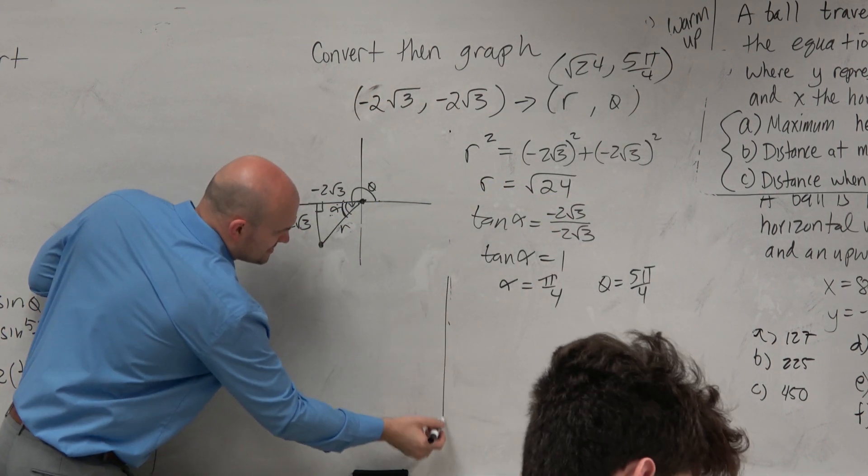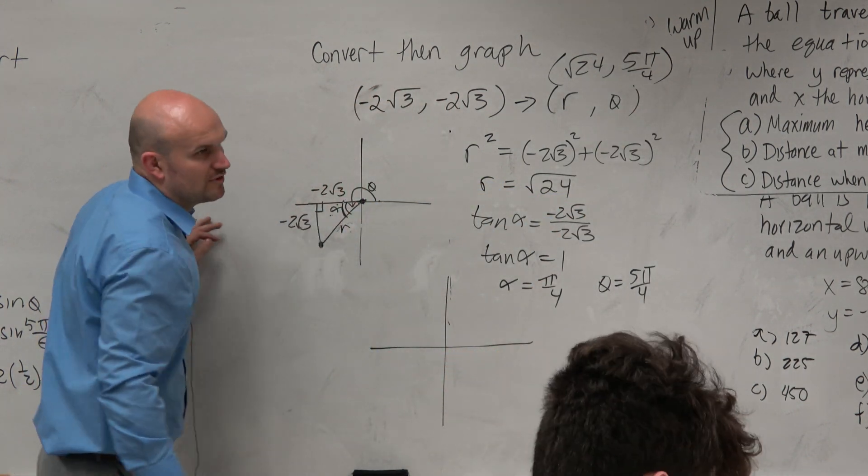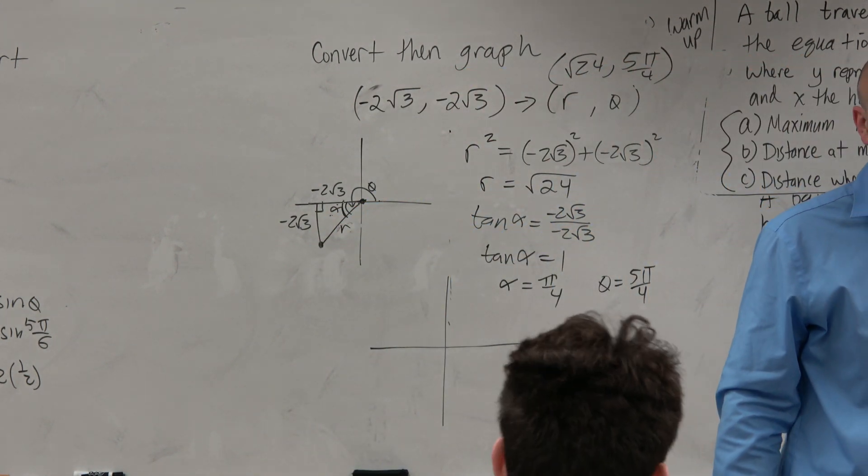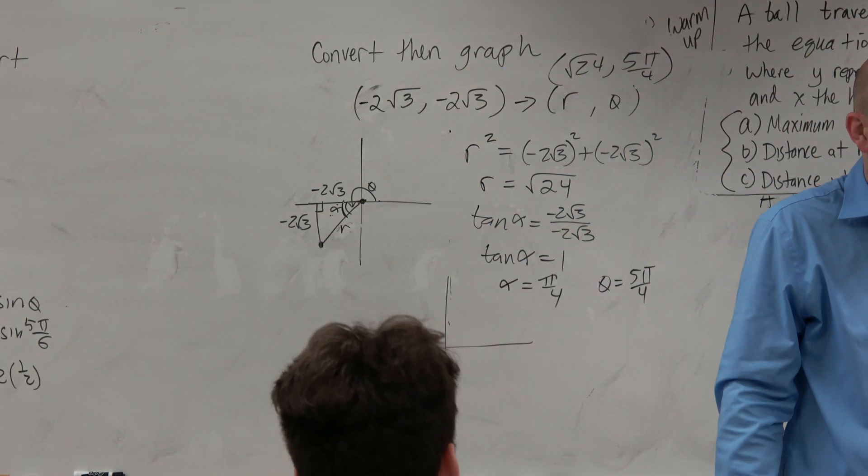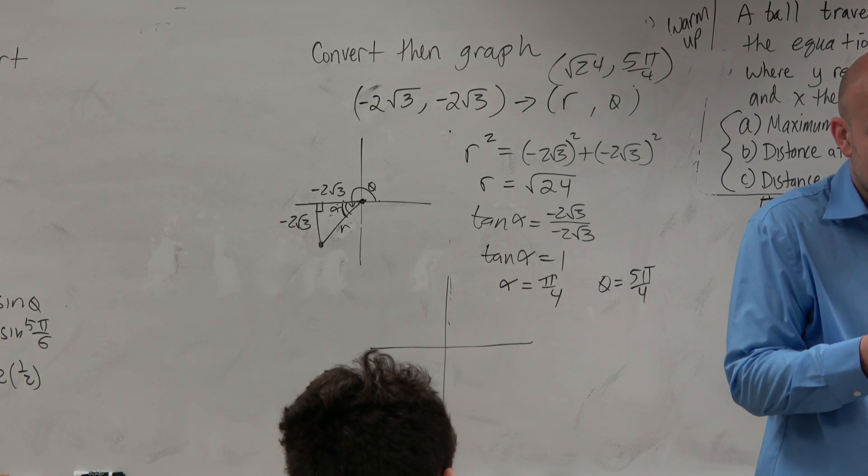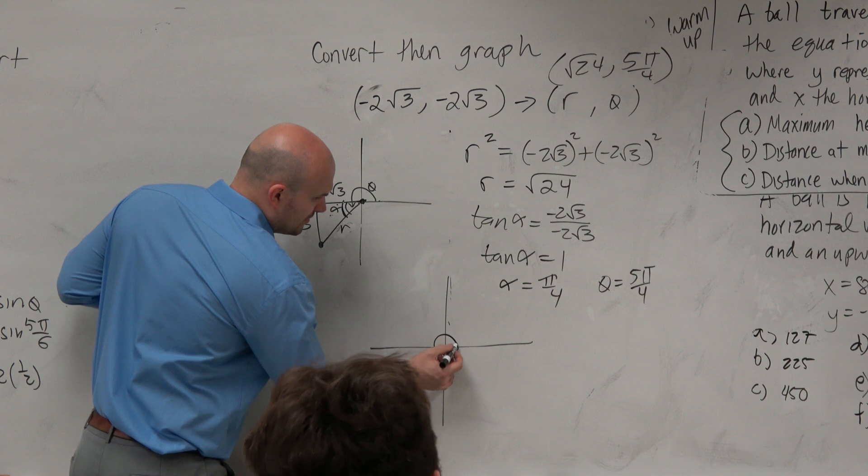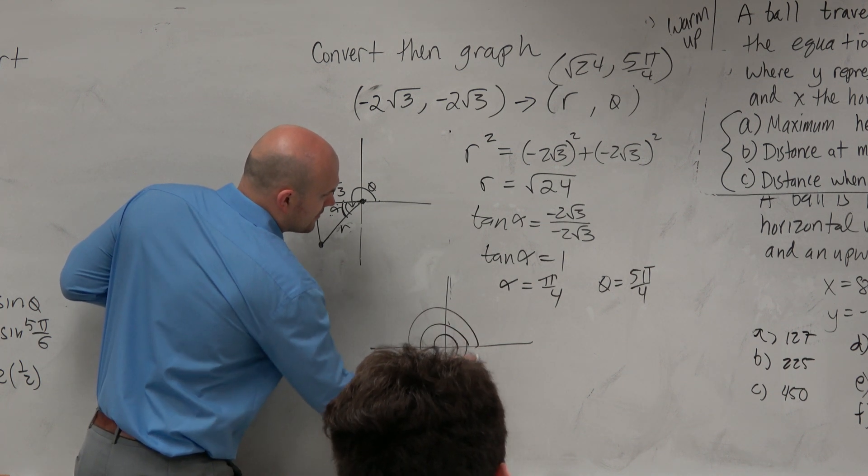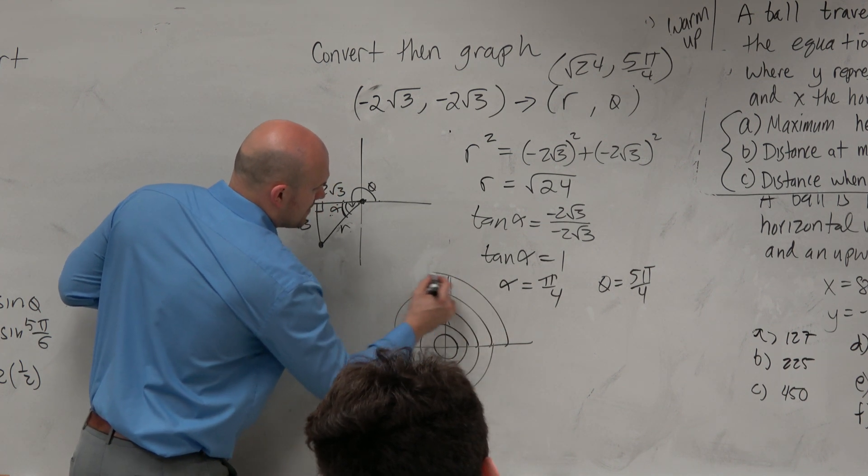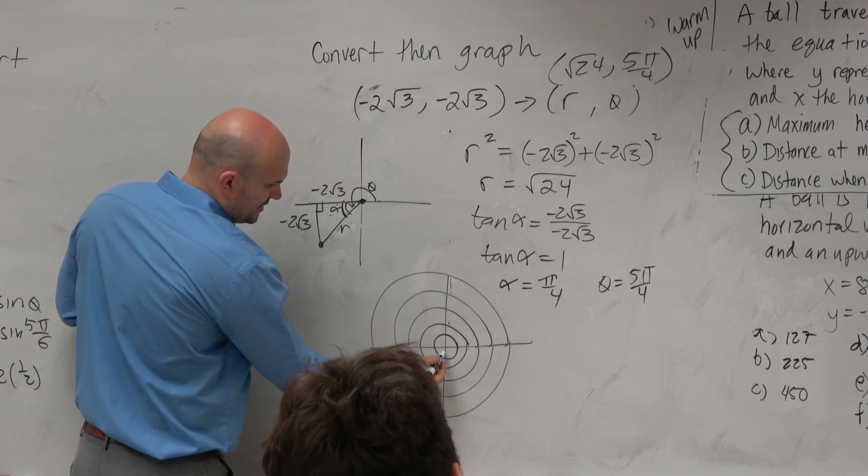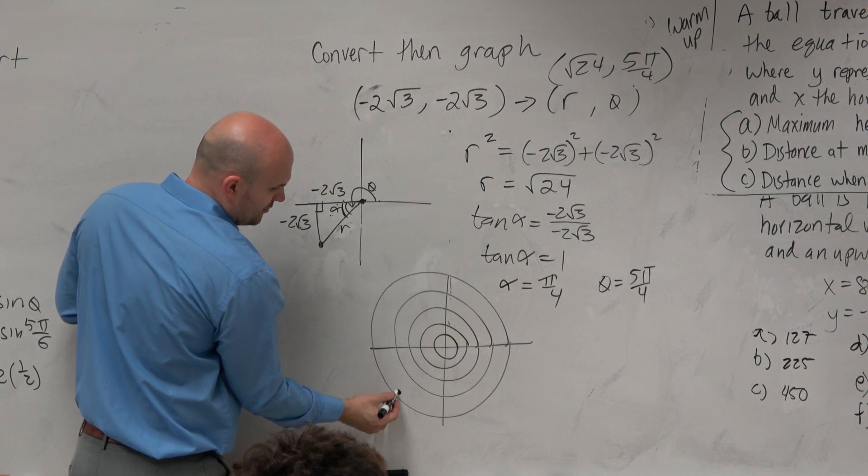Now let's go ahead and graph this. The square root of 24 is not going to be on an even ring, so let's estimate. The square root of 25 is 5, so the square root of 24 is going to be a little bit less, right? So let's do five rings and just a little bit farther in. 1, 2, 3, 4, 5, and we're at 5 pi over 4 which is down here, so we'll put a point like right there.